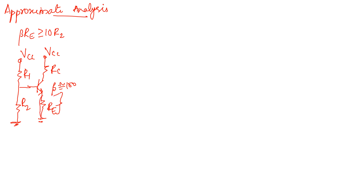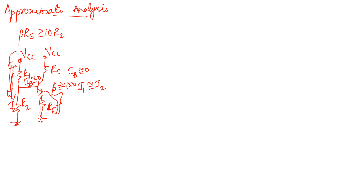If beta into RE is much greater than R2, the current will take the lowest resistance path. This means IB is approximately equal to zero, and the entire current I1 flows through R1 and R2, so I1 equals I2.